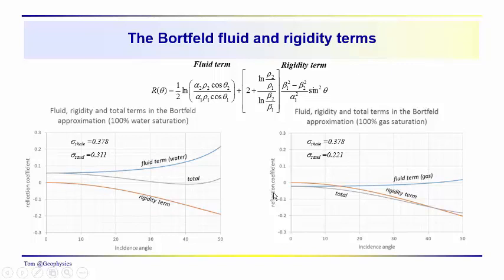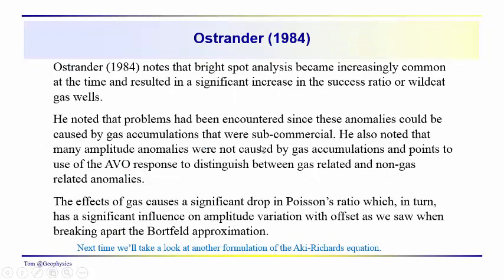We can do this with a lot of the approximations, and we'll also take a look at the Aki-Richards and break that down into its parts next time. But we want to note that this bright spot analysis, which came into vogue in the late 60s and through the 70s, did contribute significantly to the success ratio of wildcat gas wells. It was a useful method of interpretation and prospect identification.